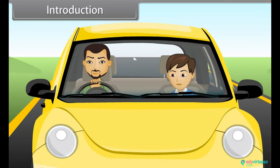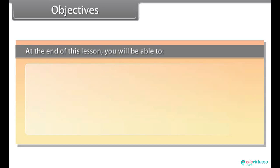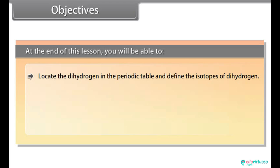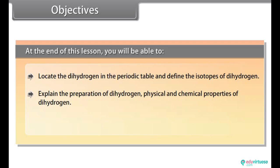In this lesson, you will learn hydrogen and its compound. Objectives: At the end of this lesson, you will be able to locate the dihydrogen in the periodic table and define the isotopes of dihydrogen, explain the preparation of dihydrogen, physical and chemical properties of dihydrogen, and explain hydrides.